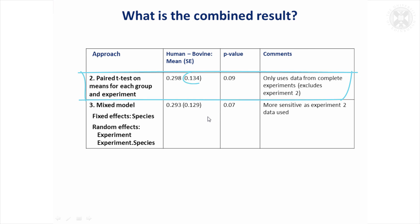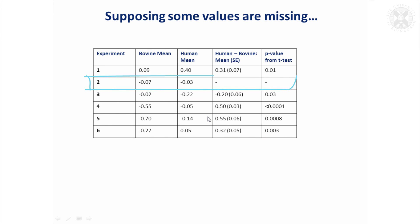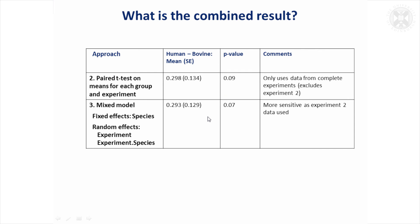So the paired t-test, non-significant, and we've got a standard error of 0.134. But the mixed model now will take into account this experiment too and use the data on the bovine mean, even though we don't have the human data. And from this, we get a slightly different estimate of the difference for the groups, and the standard error is slightly smaller. So we've gained a bit of efficiency because we have been able to use that data from experiment two, even though we only have it for one group. So that's a good reason for using a mixed model. Although, I have to say, if you've got complete data, you can quite happily do a paired t-test on the means.